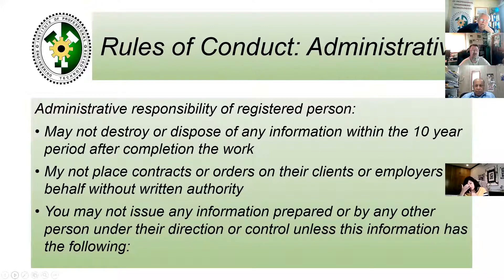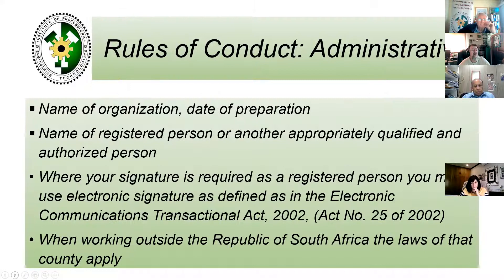Under administrative rules of conduct and the administrative responsibility of a registered person: you may not destroy or dispose of any information within the 10-year period of completion of the work. You may not place contracts or orders on the client's or employer's behalf without written authority. You may not issue any information prepared by another person unless it contains the name of the organisation, the date of preparation, and the name of the registered person. Where your signature is required, you may use an electronic signature as defined in the Electronic Communications and Transactions Act 2002, Act Number 25 of 2002.